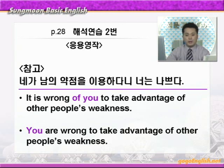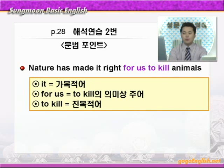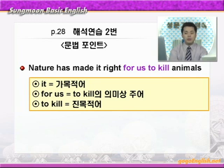만약 '네가 남의 약점을 이용하다니 너는 나쁘다'이렇게 된다면 이때는 wrong이 사람의 성질을 나타내는 형용사니까 to부정사의 의미상 주어로 for 목적격이 아니라 of 목적격을 써야 합니다. 그래서 It is wrong of you to take advantage of other people's weakness. 또는 of you에서 you를 주어로 하면 You are wrong to take advantage of other people's weakness. Nature has made it right, 여기서 it은 가목적어, for us가 to kill의 의미상의 주어, to kill은 진목적어가 되겠습니다. 그럼 3번을 할 차례입니다.